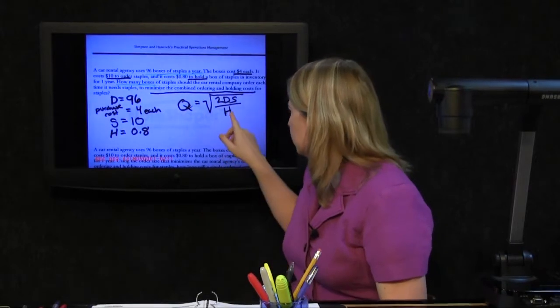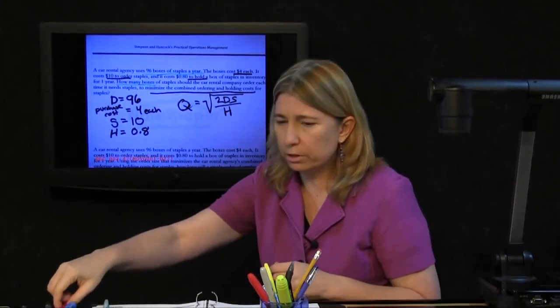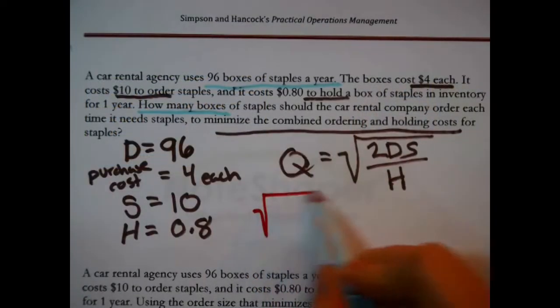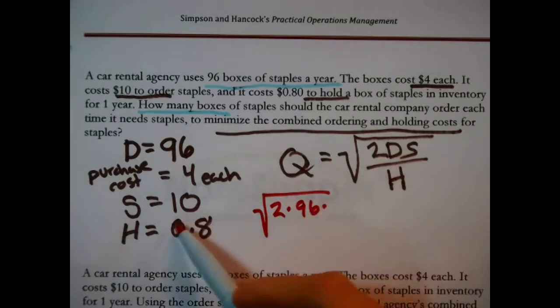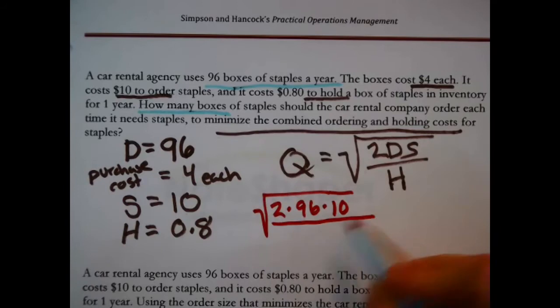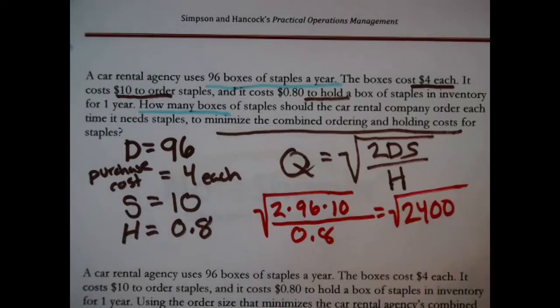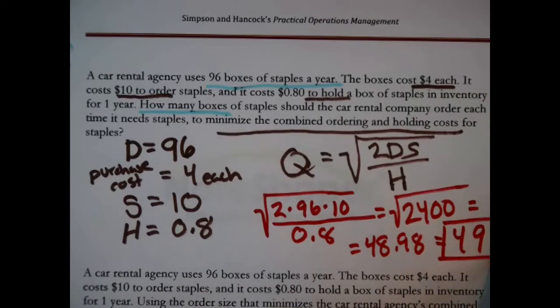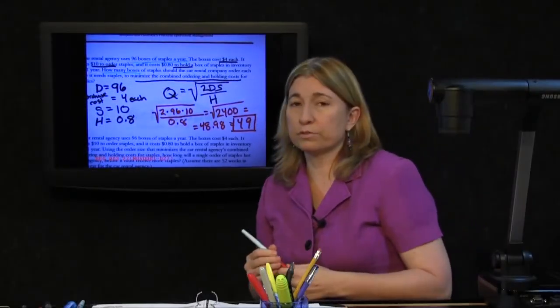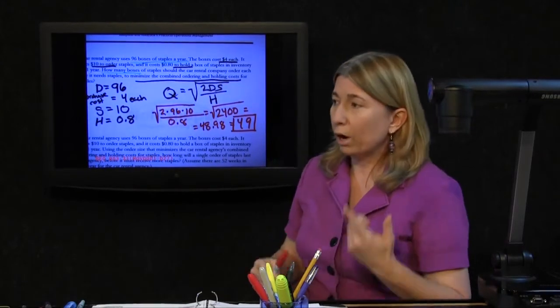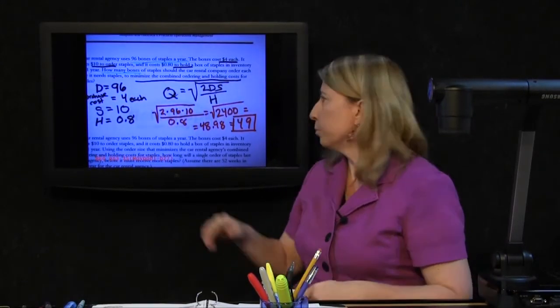In order to finish out this problem, we need to fill out that formula. It looks like we have everything we need. So 2 times D is 96 times S is 10 divided by 0.8. When I did that on my calculator, the interior was 2400. You still need to take the square root. When you do that, it comes out a little messy, like 48.98, of which there's no such thing as 0.98 boxes of staples. Safe enough to say, we would logically recommend that they order 49 boxes of staples every time they need new staples, because that will minimize these ordering and holding costs. It's the result of the EOQ formula.